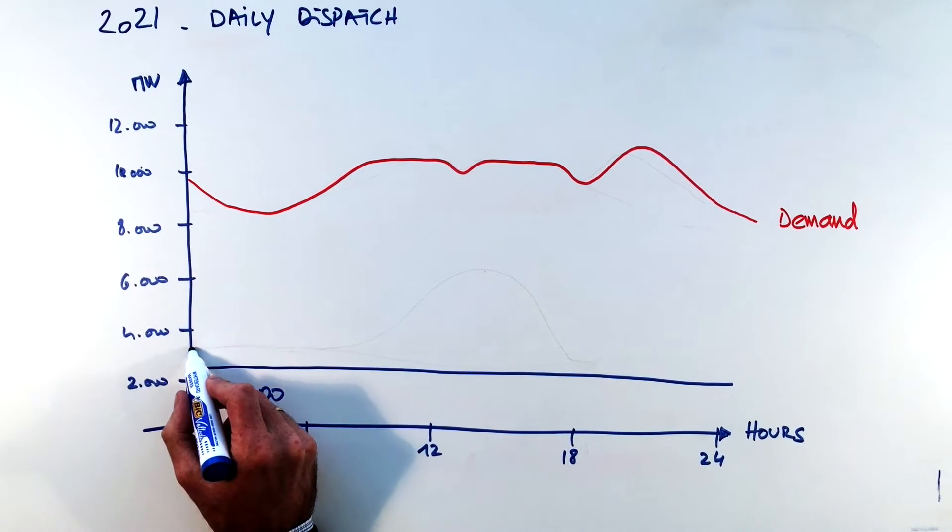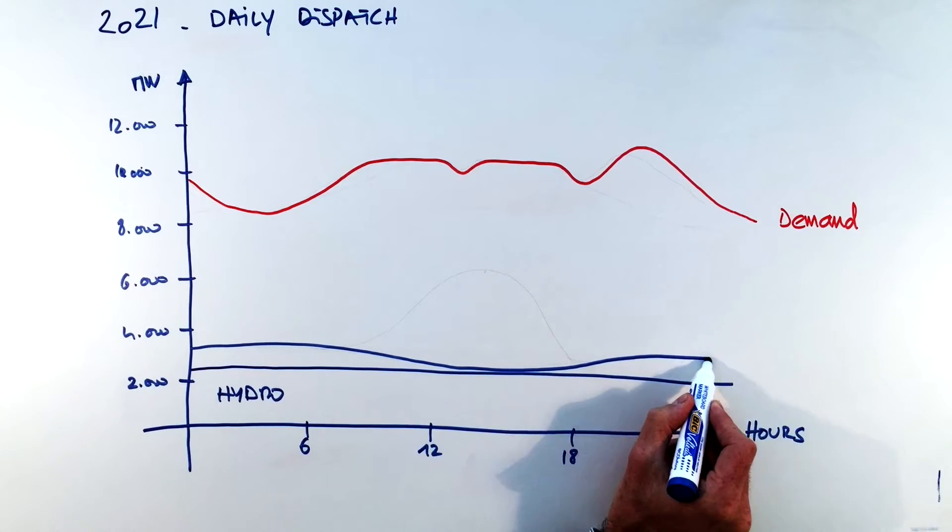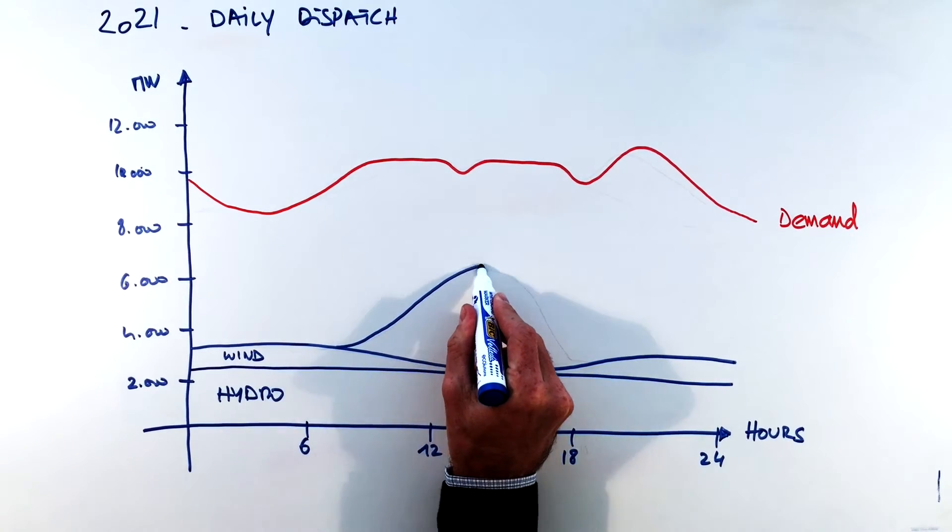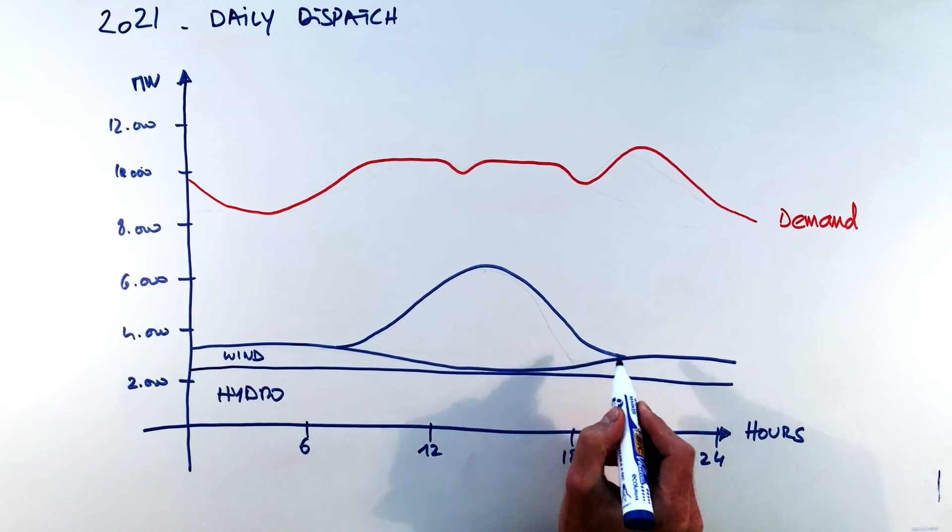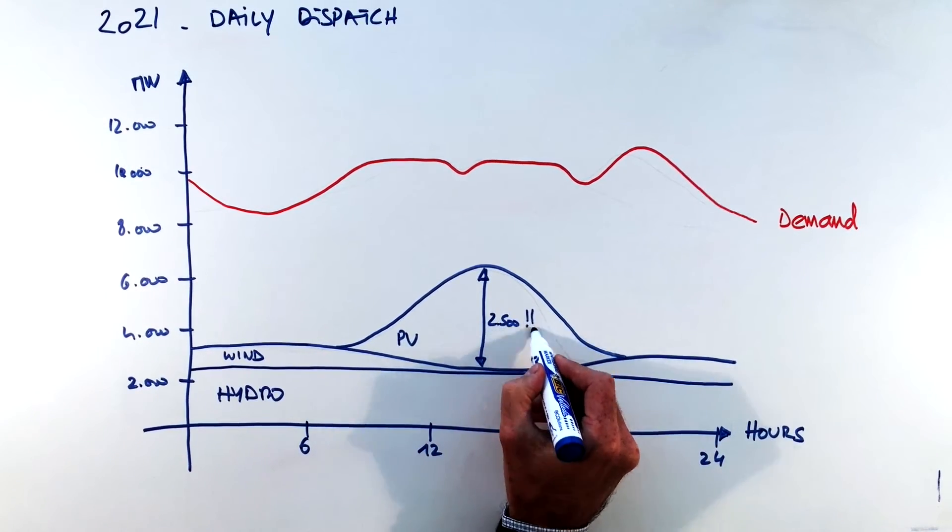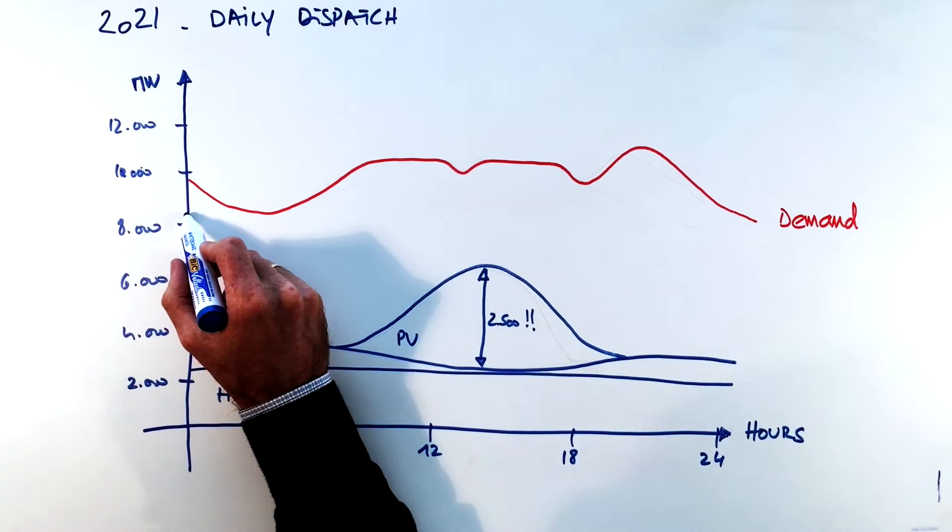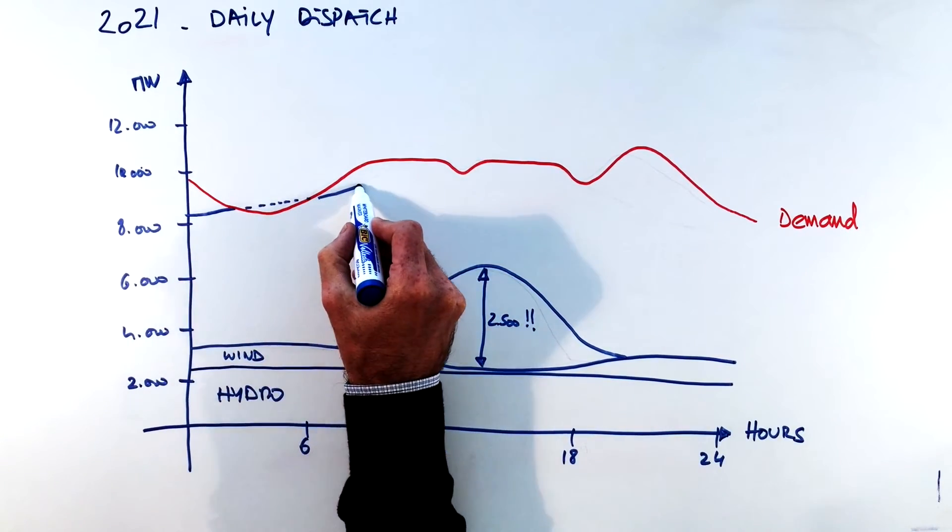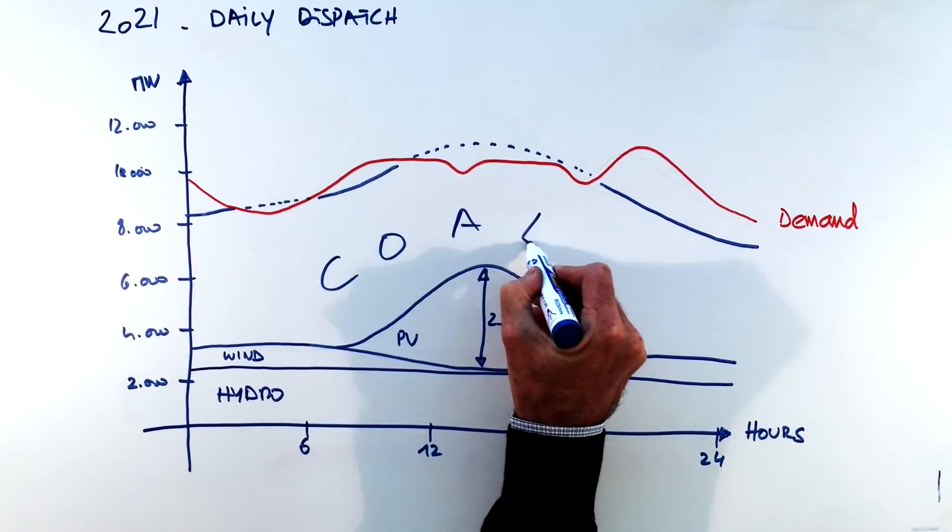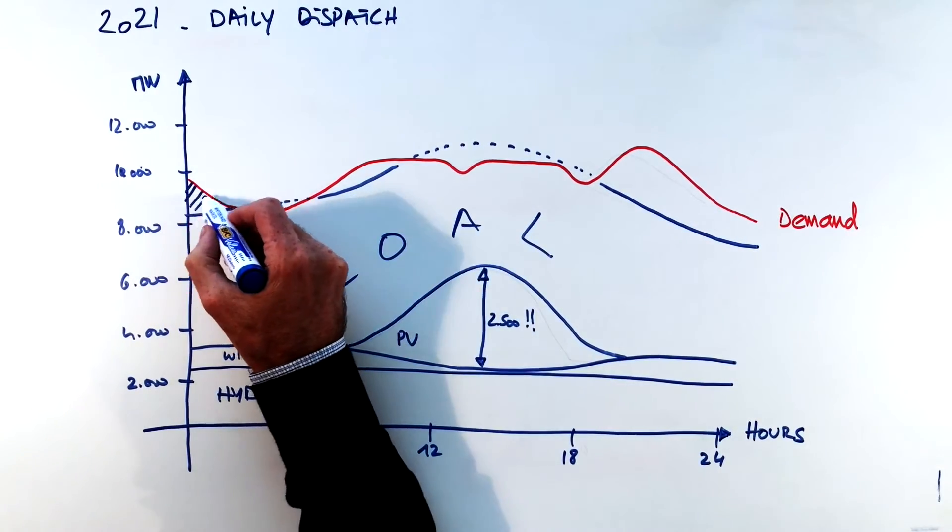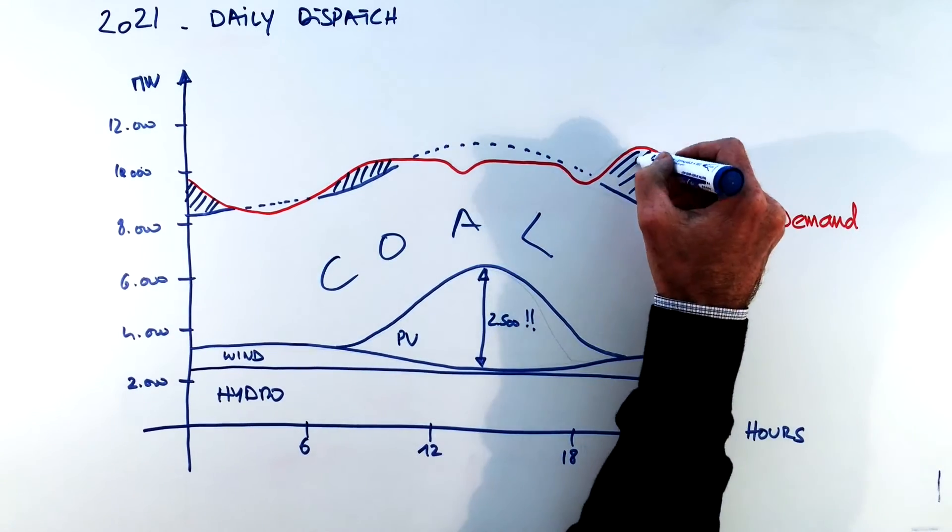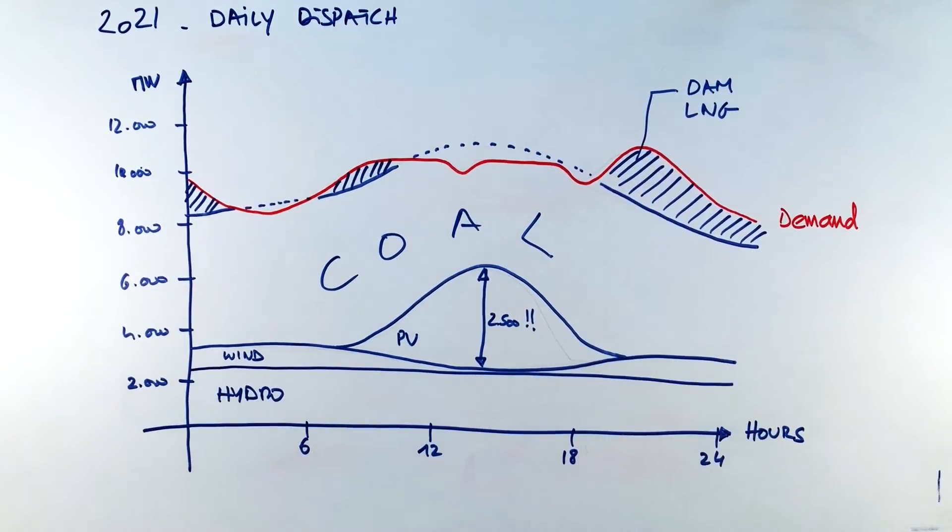So how is the demand satisfied? So first we have a big hydro base of 2,000 roughly megawatts, then on top of that we have wind which is more night than day profile. Then we have solar on top of that and solar has a special curve as you know, reaching its peak at noon, two in the afternoon with two and a half thousand megawatts. Then on top of solar we have coal that almost satisfies all the demand unless the peaks and the peaks themselves can be fulfilled with other technologies, quick start technologies which are mainly either dams or LNG engines.